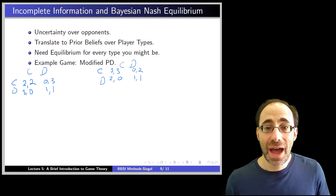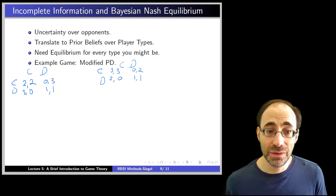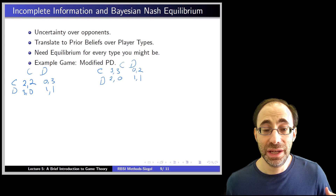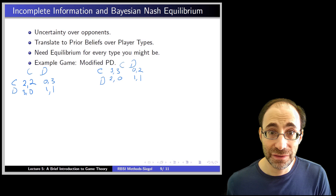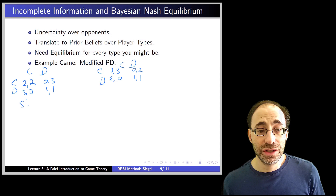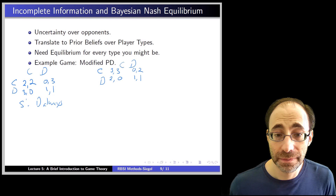So what do we do with this? The first thing is we have to figure out for each type I might be, what should I do? Well, what if I'm the selfish type? For the selfish type, we know it's always a dominant strategy to engage in defection regardless of what my opponent does — always. That doesn't change if my opponent is altruistic; I don't really care what their payoffs are. My payoffs are still dominant for defection. So the selfish type of me is going to always play defect. And that's true for my opponent as well — if my opponent is a selfish type, they will always play defect.